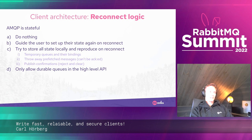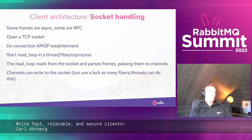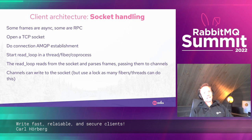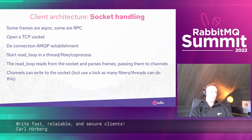For socket handling in the client library, I typically open the TCP connection, do the seven-packet connection establishment dance, then start a read loop in a thread or fiber. I let the read loop read from the socket and parse the frames and pass them through channels. I allow all channel methods to write directly to the socket, but I put a lock on the socket so only one thread can write at a time — otherwise you get weird errors where frames are intermingled and the protocol breaks.